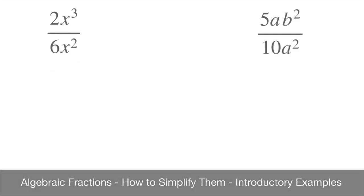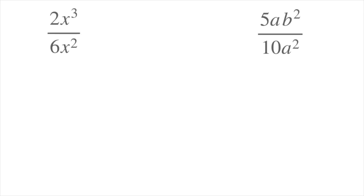Let's say we're given the two fractions that we have here, and we're asked to simplify them. Looking at the one on the left-hand side here, we have 2x to the power of 3 over 6x squared. The idea behind simplifying this is to cancel out the highest common factor of the numerator and the denominator.